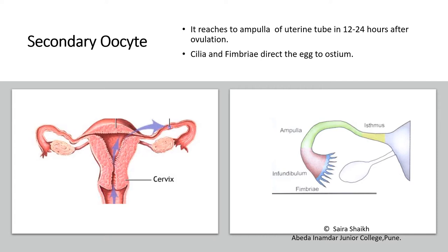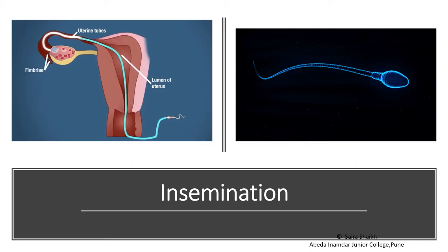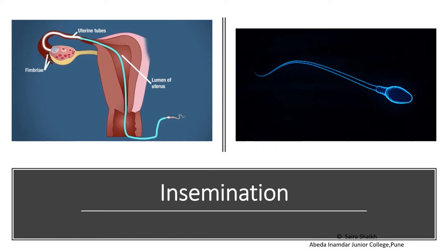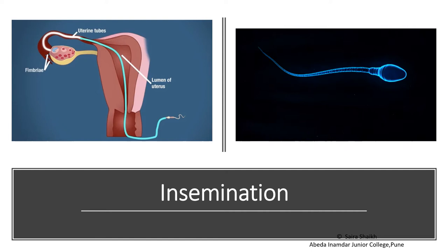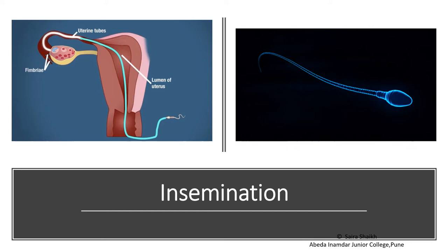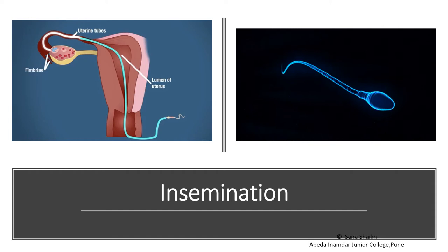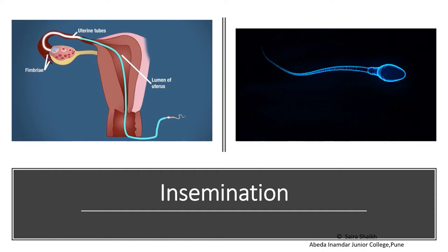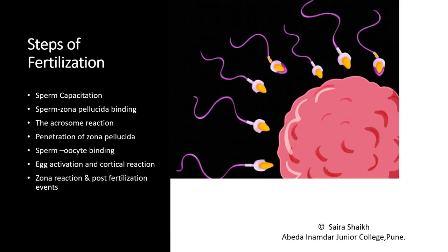Look at the figure. The ampulla is the next part of the uterine tube. Here, the secondary oocyte reaches after ovulation, which requires about 12 to 24 hours. The secondary oocyte is now waiting for the male gamete for the process of fertilization. During the sexual act or the coitus process, the male introduces its sperm into the female tract — a process called insemination. Here we can see the path of the sperm through which it reaches the ampulla region, where the egg is waiting for fertilization.